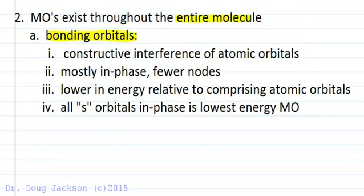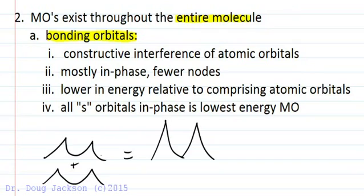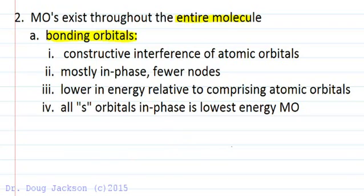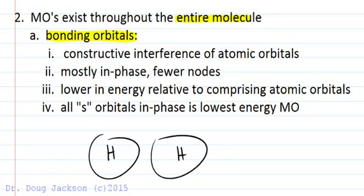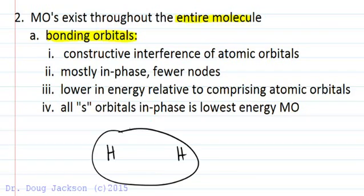With bonding orbitals, we have constructive interference of atomic orbitals. Just like two ocean waves that may come together and double in size if they are in phase with one another, you might add these two together and come together constructively. We have orbitals such as the s orbital of hydrogen that come together constructively to make a molecular orbital. It's constructive interference of the wave functions of the orbital, and we're in phase with one another.